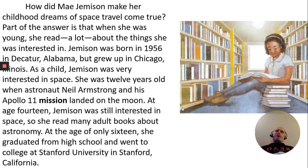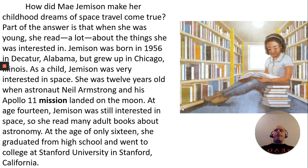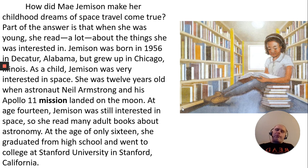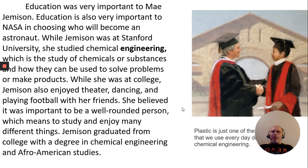How did Mae Jemison make her childhood dreams of space travel come true? Part of the answer is that when she was young, she read a lot about things she was interested in. Jemison was born in 1956 in Alabama but grew up in Chicago, Illinois. She was 12 years old when Neil Armstrong and his Apollo 11 mission landed on the moon. At age 14 she read many adult books about astronomy, and at only 16 she graduated from high school and went to college at Stanford University in California. Education was very important to Mae Jemison, and also very important to NASA in choosing who will become an astronaut.